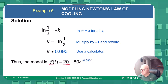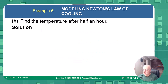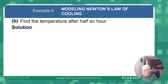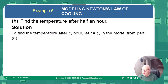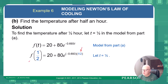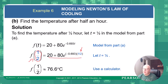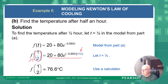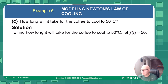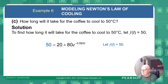Now the complete model is established. To find the temperature after half an hour, substitute t equals one-half into the model. Here's our one-half for t, and using the model with k equals 0.693, we get approximately 76.6 degrees Celsius after thirty minutes.